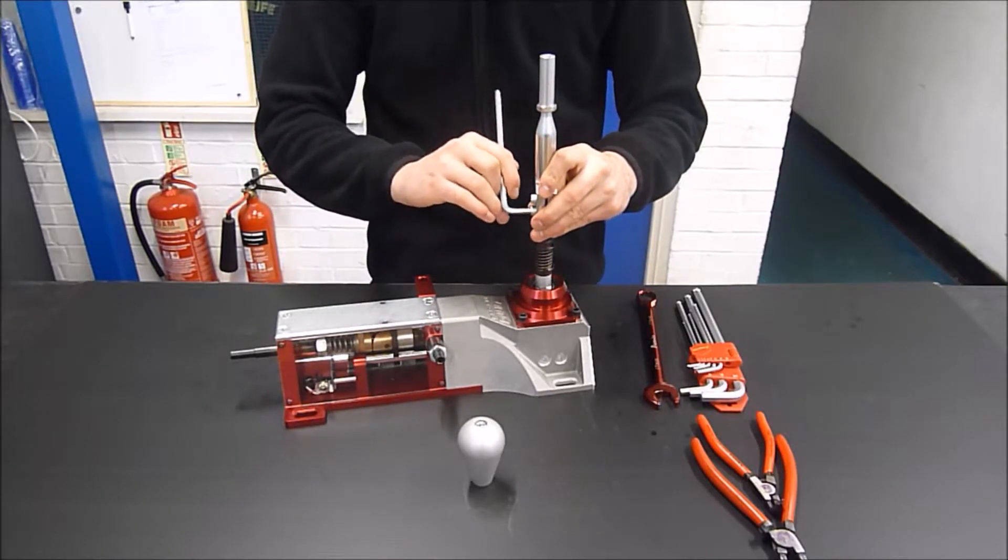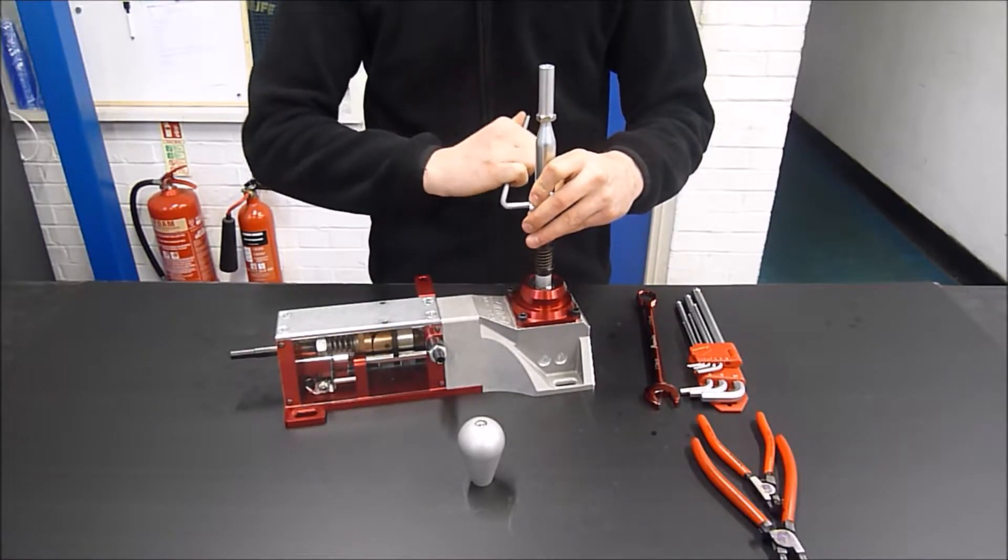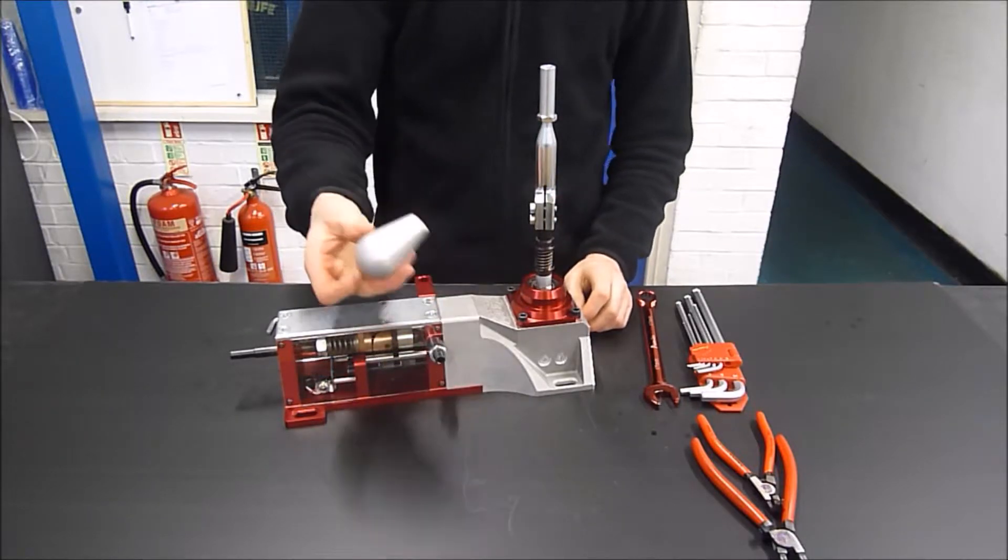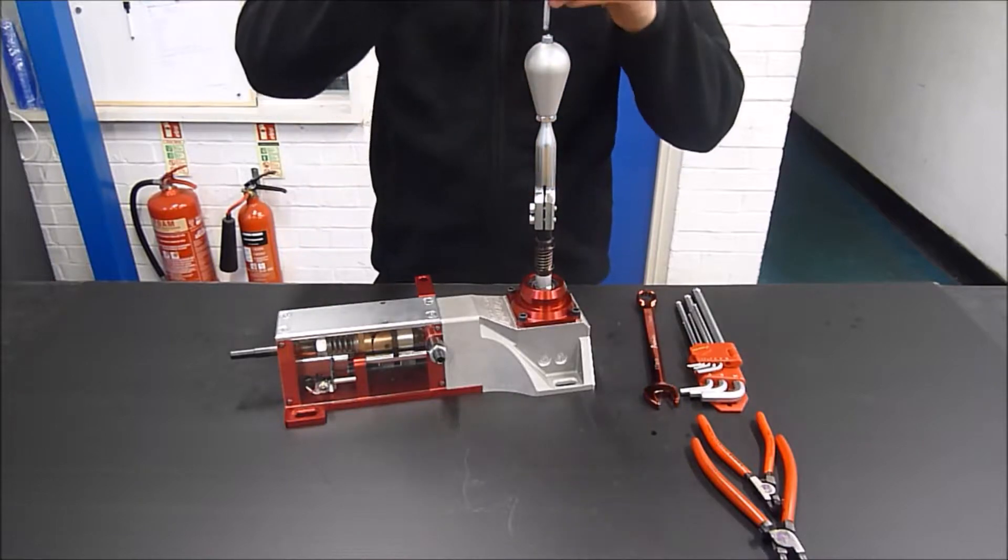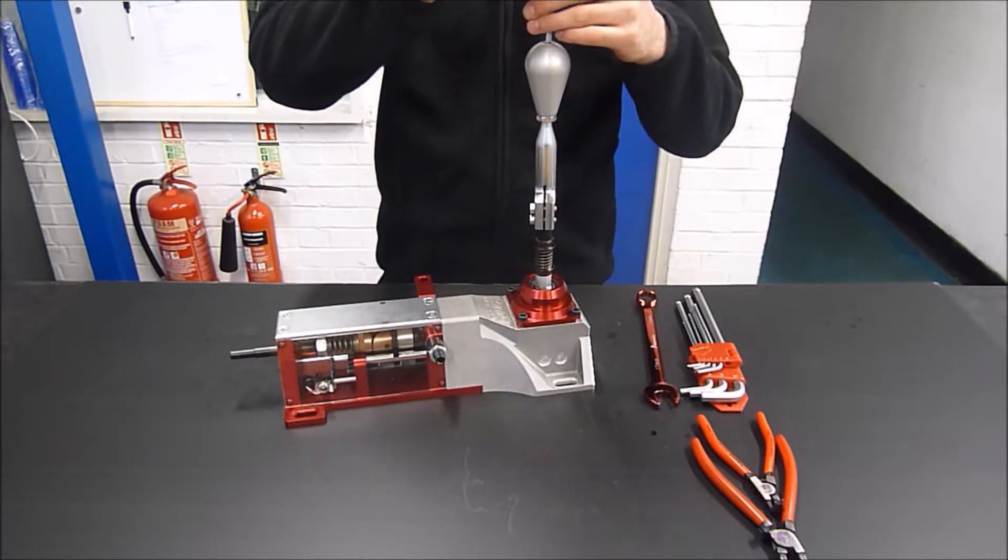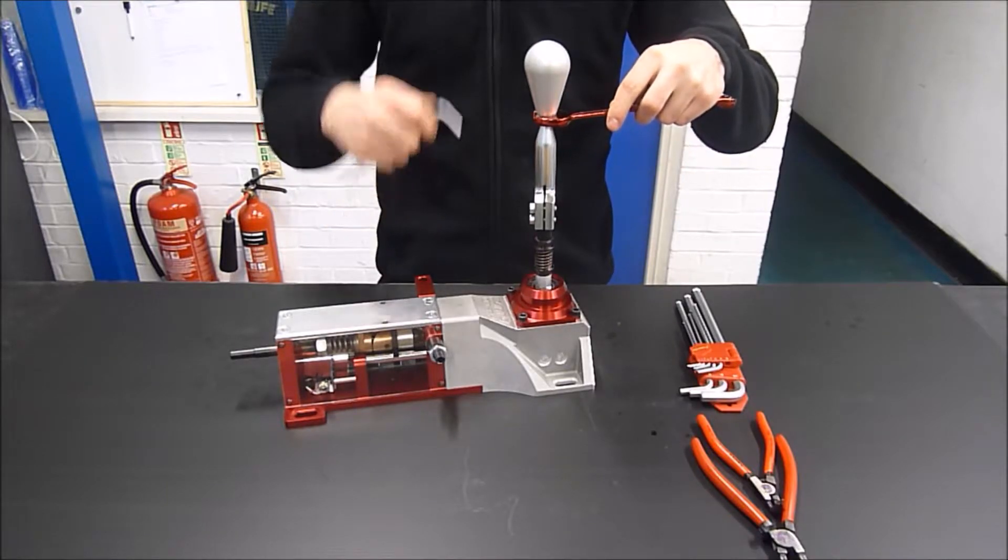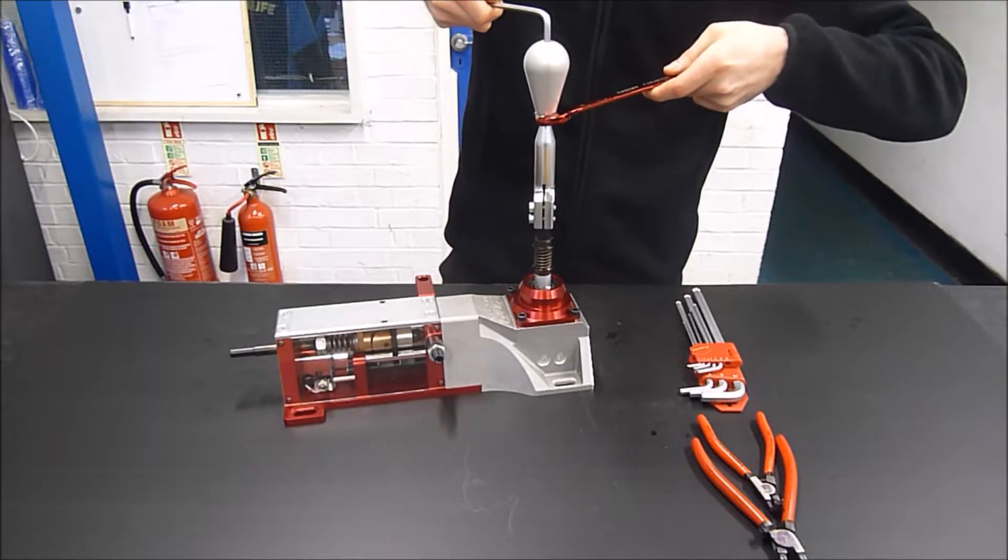So if we go somewhere in the middle like this, just hold it where we want it and tighten up the two bolts like that, and then we can put the gear knob straight on the top, tighten that up, and then you need a 17mm spanner to just hold on to the nut here and then tighten the two together like so.